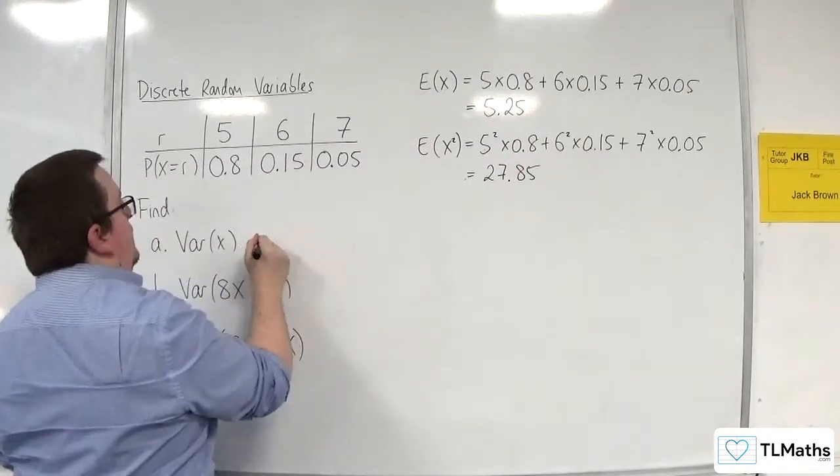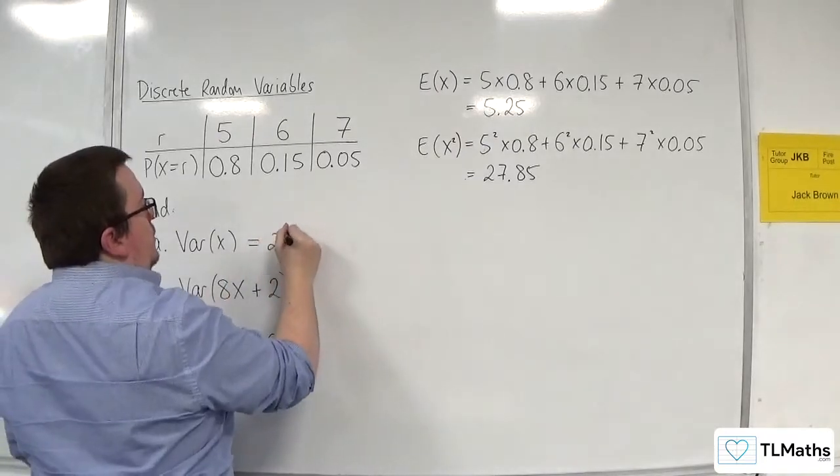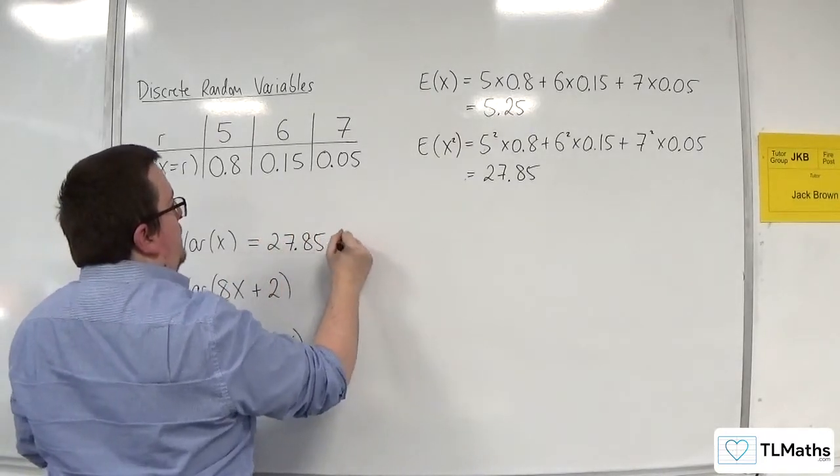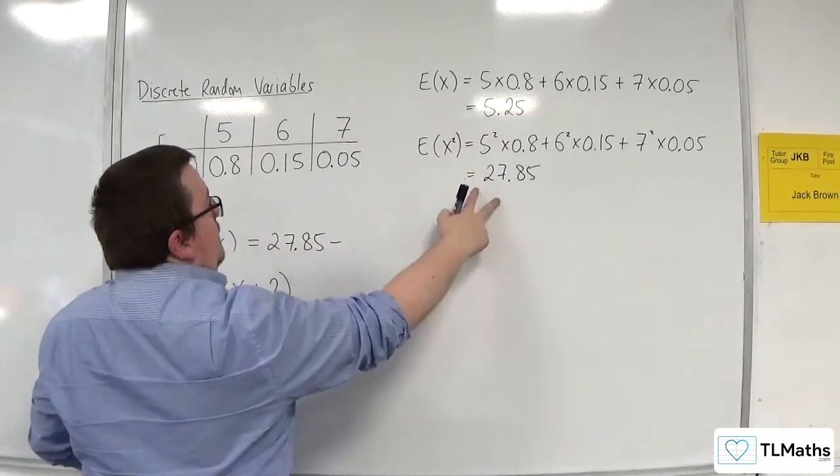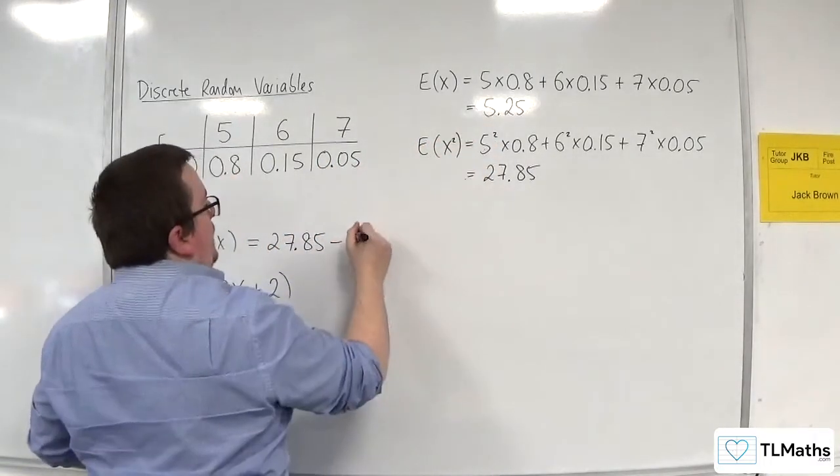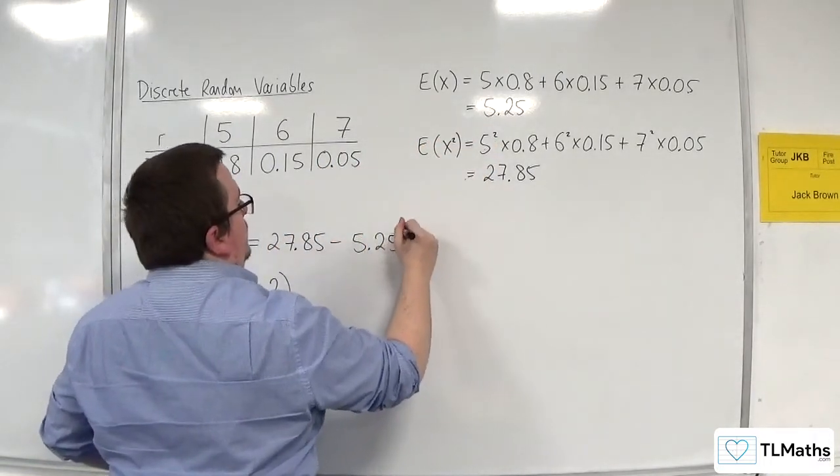So that means that var of x is equal to 27.85, so E of x squared, take away E of x all squared, so 5.25 squared.